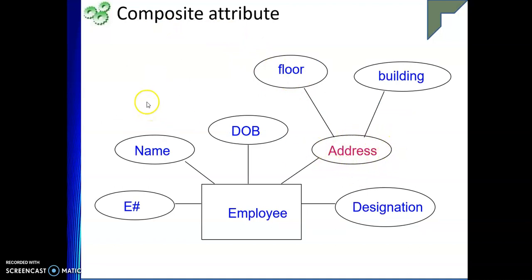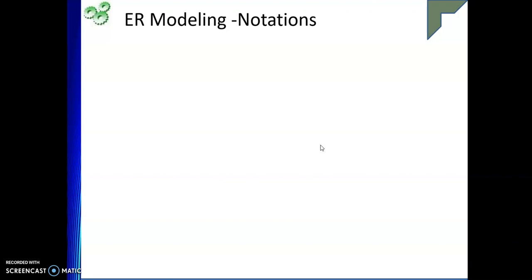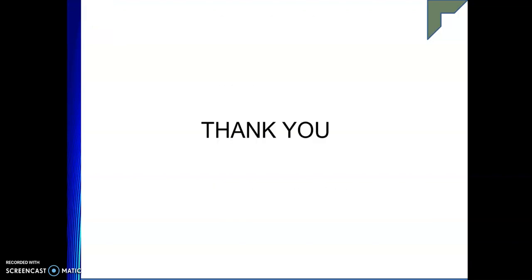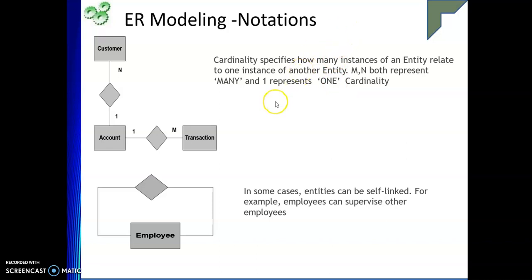Next we have a composite attribute. There is no special notation symbol for composite attributes. What you do is write the main attribute — for example, address — and then connect its component attributes to it, such as floor and building. Both floor and building are attributes connected to address, which tells us that address is a composite attribute.